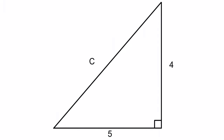Let's throw some values at this. A and b have been given the values of 4 and 5. We're trying to determine what c is. Using Pythagoras's theorem we know that a squared plus b squared is equal to c squared, so the formula is going to be 4 squared plus 5 squared is equal to c squared.